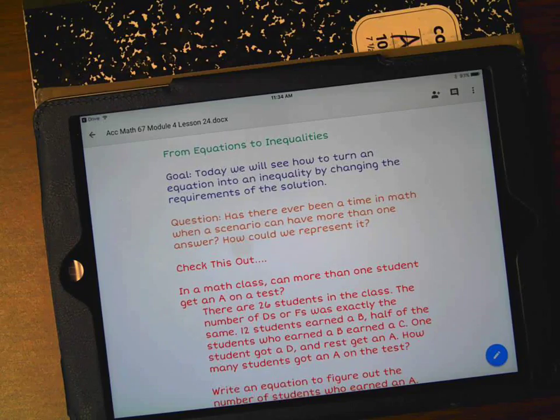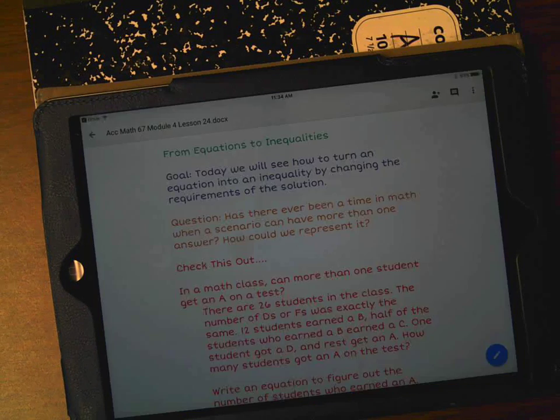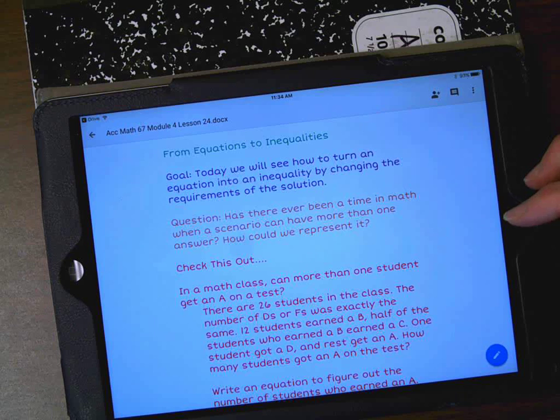Because you could have a 99 and you could have a 92 and it would still be an A. There's many times when you can have more than one answer to have the answer come out correct. And that's what we're going to talk about in this lesson today.